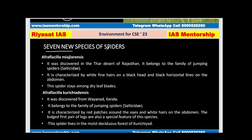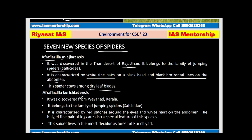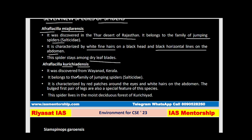Recently, seven new species of spider have been discovered. The first, Afraflacilla, was discovered from the Thar Desert of Rajasthan and belongs to the family of jumping spiders. It has white fine hairs on a black head and black horizontal lines on the abdomen, and stays among dry leaf blades. The second, Afraflacilla currichiadensis, was discovered from Wayanad, Kerala — also a jumping spider — with red patches around the eyes and white hairs on the abdomen, living in moist deciduous forest.